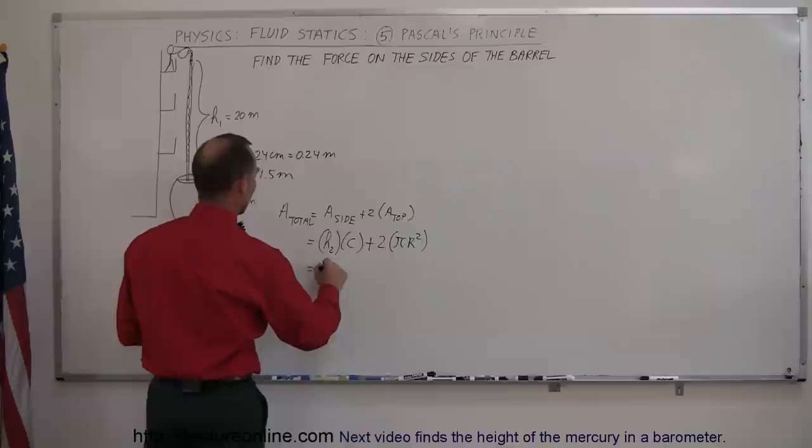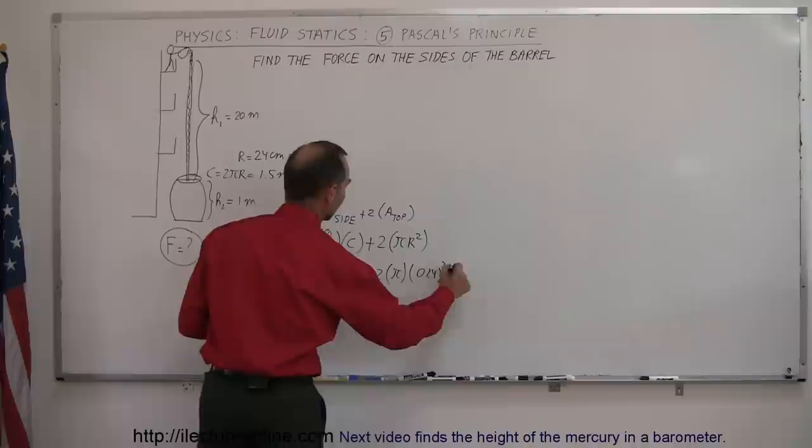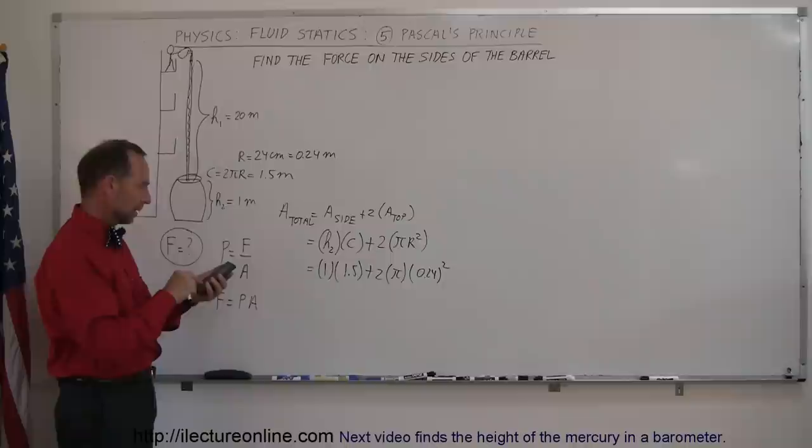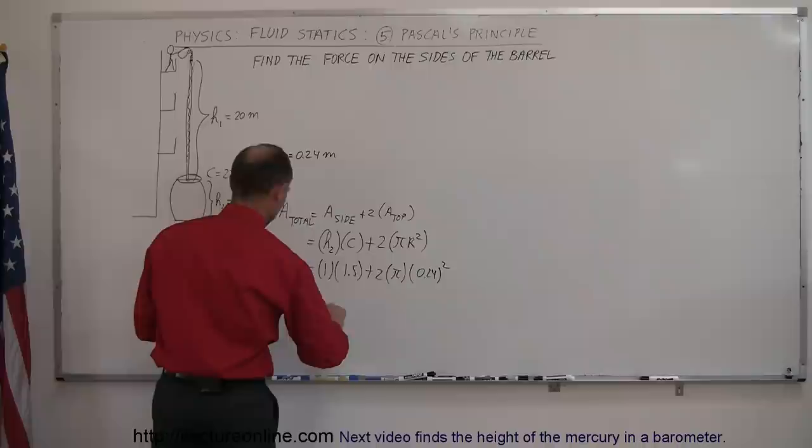Plus 2 times π times the radius squared, which is 0.24 quantity squared. That number squared times 2 times π, plus 1.5.